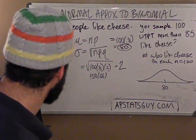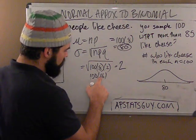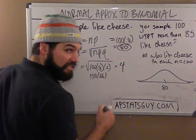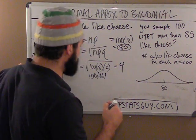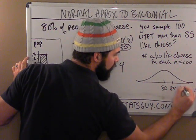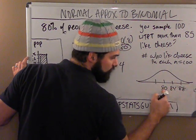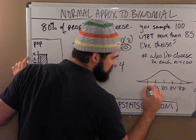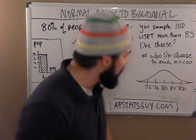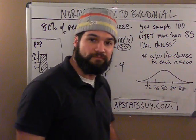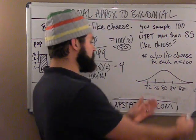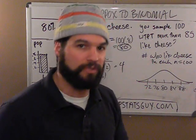So the standard deviation is 4. Going up from the mean of 80: 84, 88. Going down: 76, 72. In this model, 68% of the time I'm going to have between 76 and 84 people who like cheese in my samples of size 100. 95% of the time, between 72 and 88 people will like cheese.